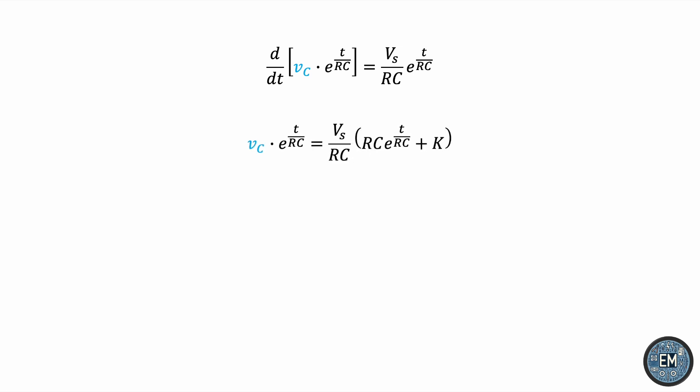Let's distribute and notice that RC cancels out in the first term on the right-hand side. Now dividing both sides by the exponential, we get our solution for the capacitor voltage, but notice that we still have this constant K which came from the integration.